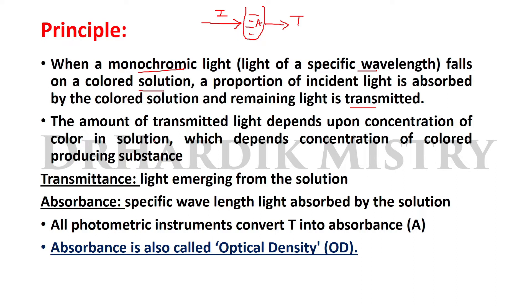The amount of transmitted light depends on the concentration of color in the solution, which depends on the concentration of color-producing substances. Transmittance is the light emerging from the solution, and absorbance is the specific wavelength of light absorbed by the solution. All photometric instruments convert transmittance into absorbance. Absorbance is also called optical density or OD.